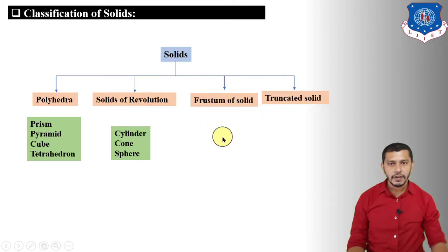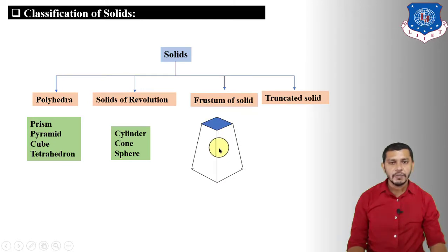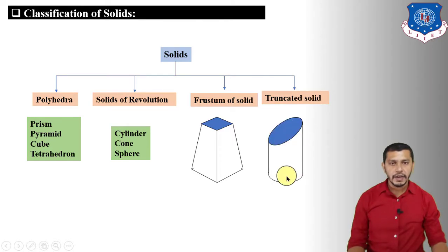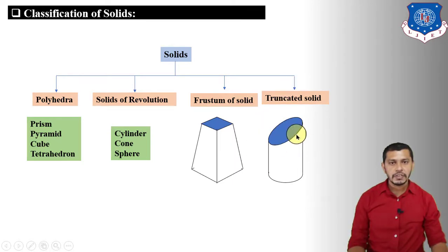If the pyramid or cone is cut by a cutting plane parallel to its base and we remove the upper part, the remaining part is known as the frustum of a solid. For a truncated solid, the solid is cut by a cutting plane inclined to its base, and if we remove that section, the remaining part is known as the truncated solid.